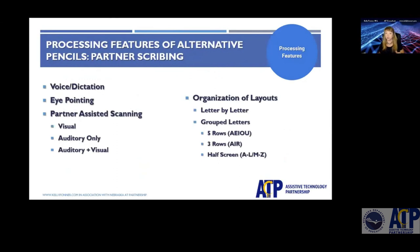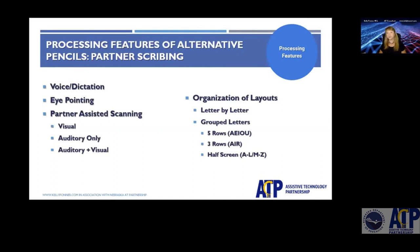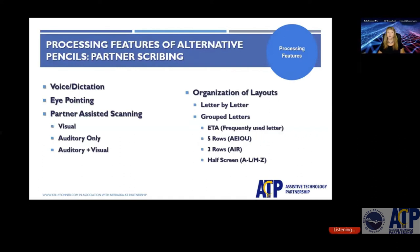We'll also look at scribing, where you have a partner you are scribing to — whether by voice dictation, eye pointing to letters you want written down, or some type of partner-assisted scanning where an individual points to the rows and columns and individual letters as you make your selections. Whether those are presented auditorily or just visually often depends on the amount of functional vision the client has. Layouts can also be organized by frequency, grouped alphabetically in rows, or broken in half — you'll see those examples in future slides.